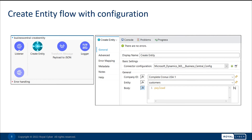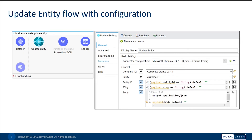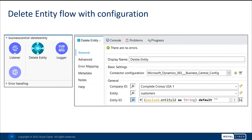To create a single new entity, we need configurations like company ID, entity, and entity payload. To update a single entity by its ID, you must provide the latest e-tag value for the entity to update successfully. For this connector, we need configurations like company ID, entity, entity ID, e-tag, and entity payload.